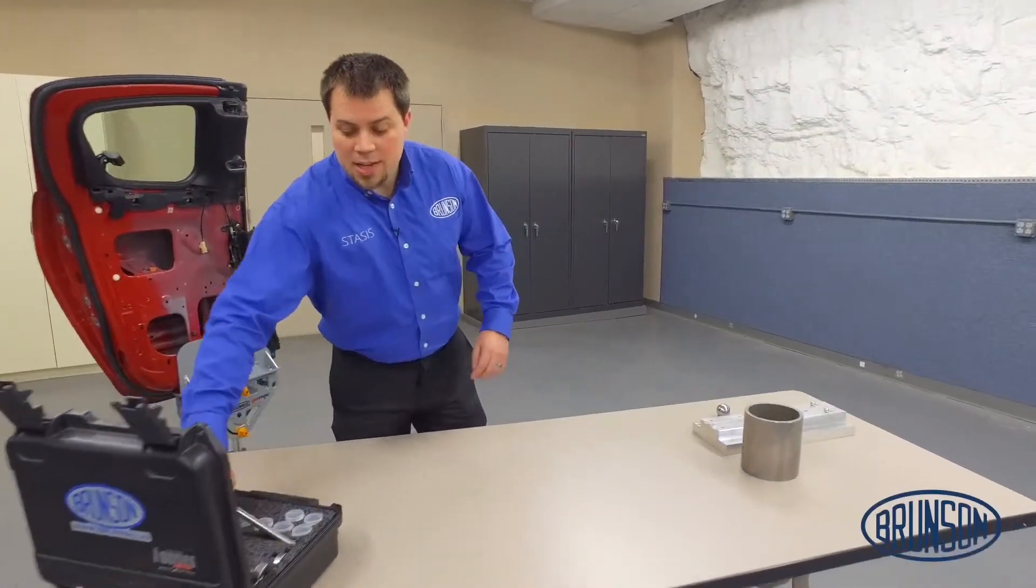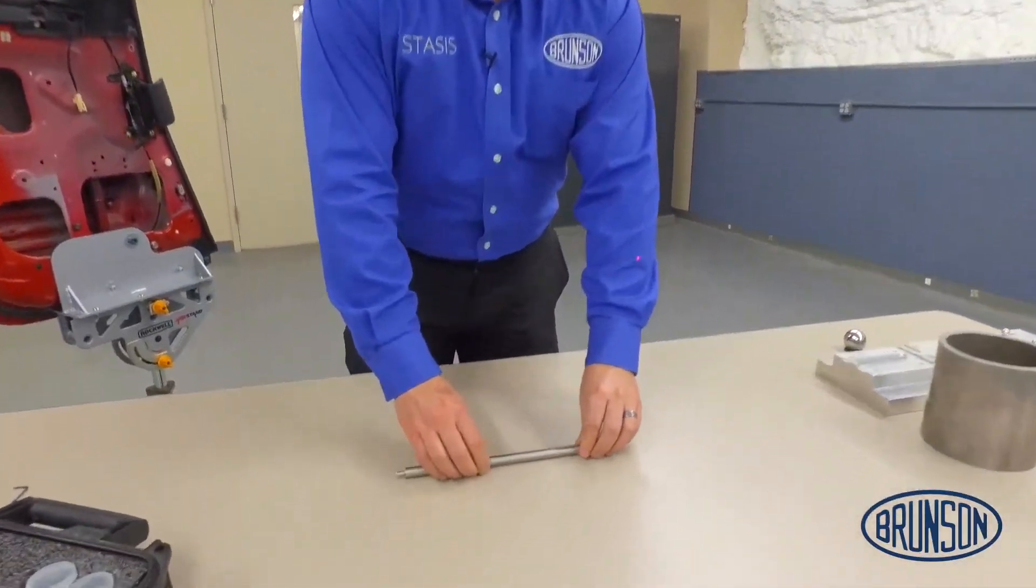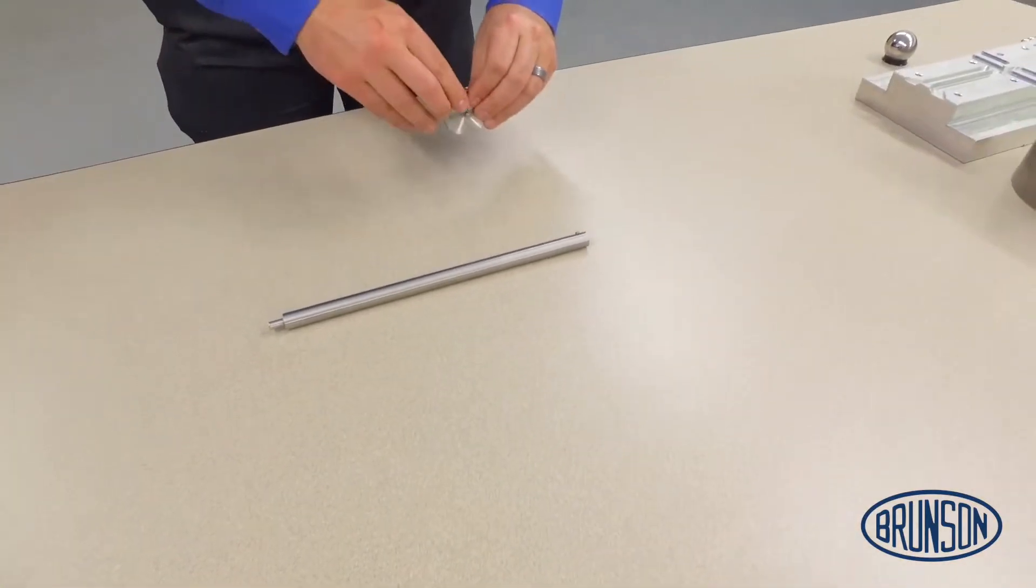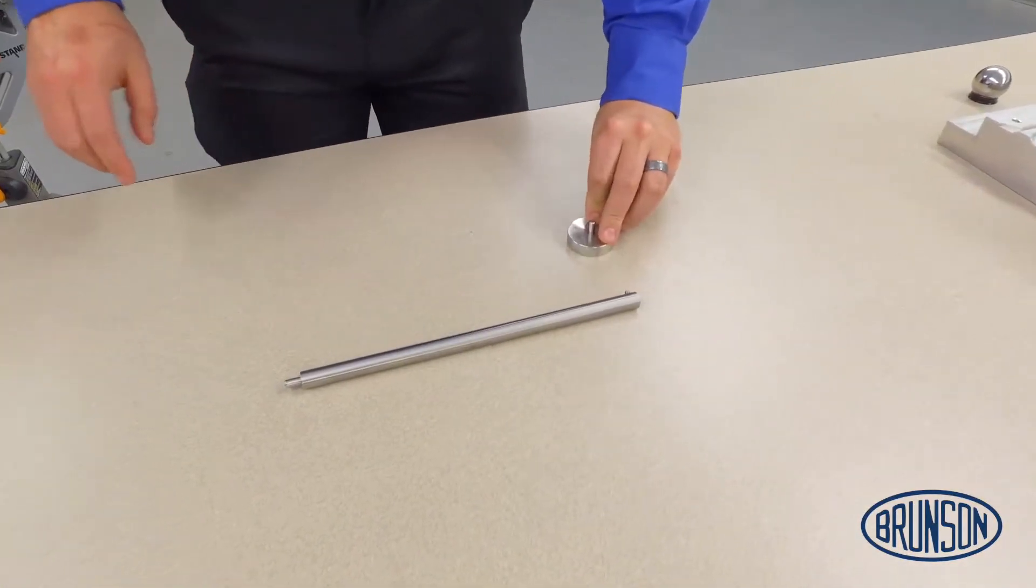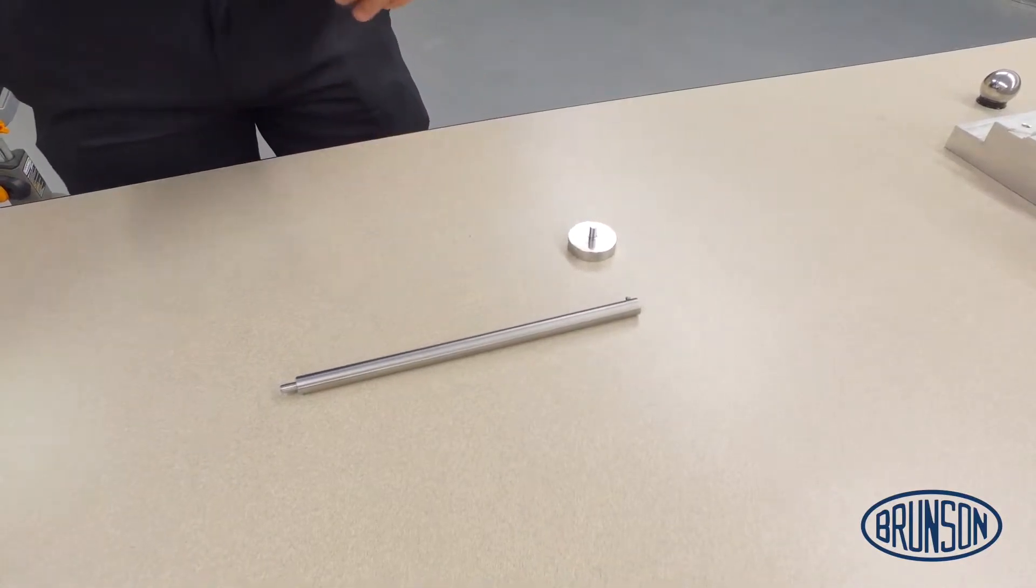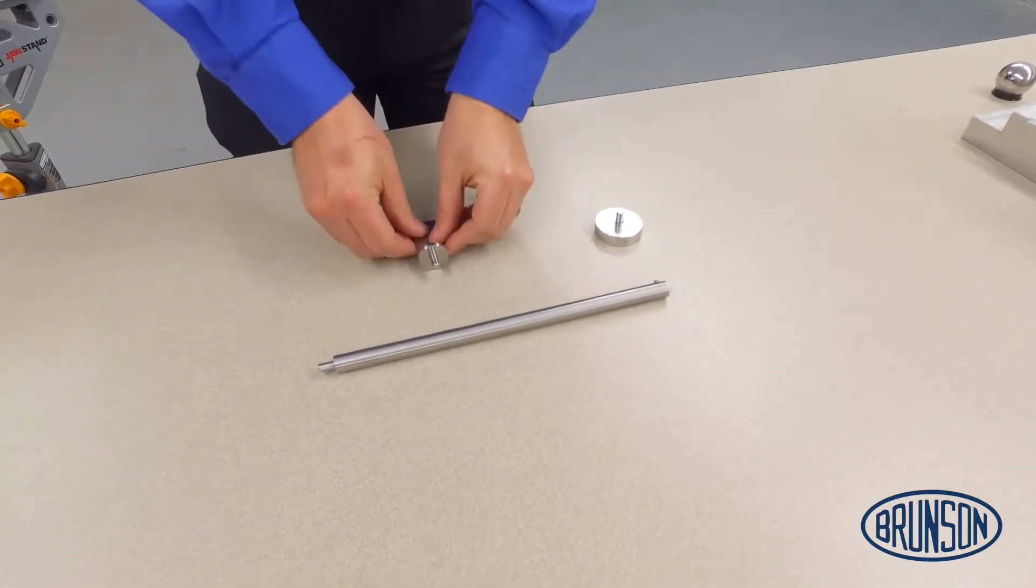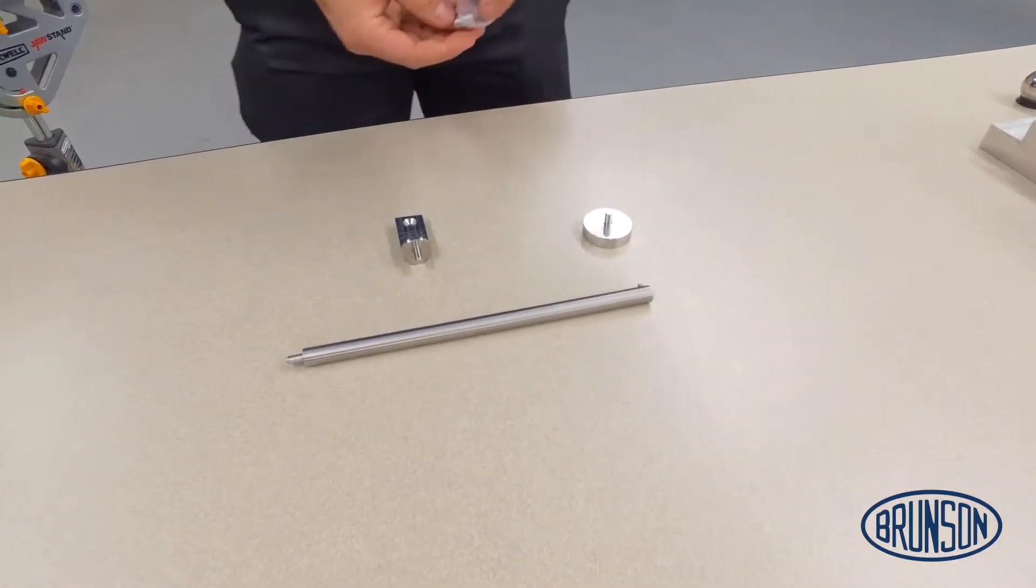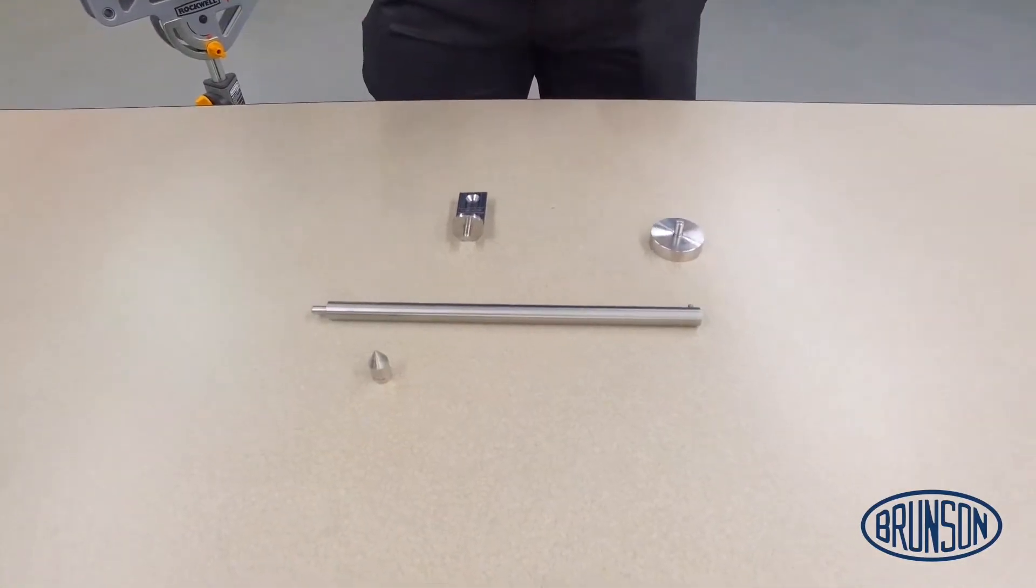This is the BXT or bar extension tool. It works with a pin nest with a diameter of 6mm in this case, or a quarter inch if it's an English kit. It comes standard with the hard point adapter.